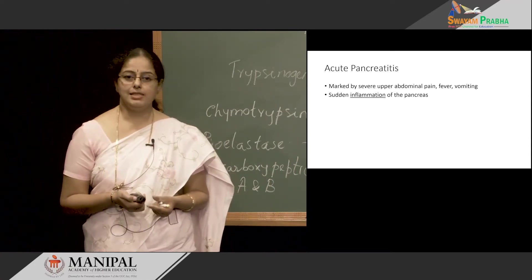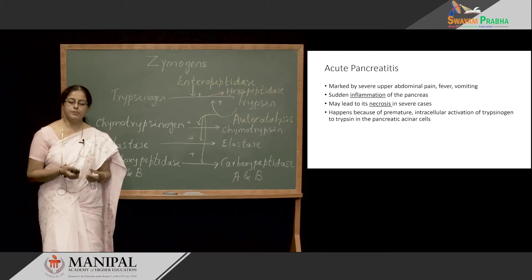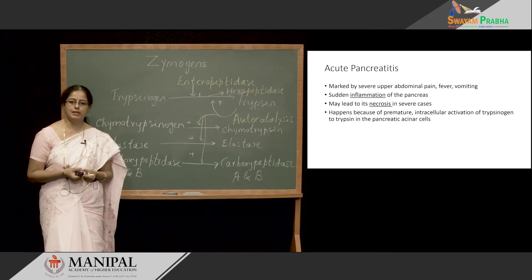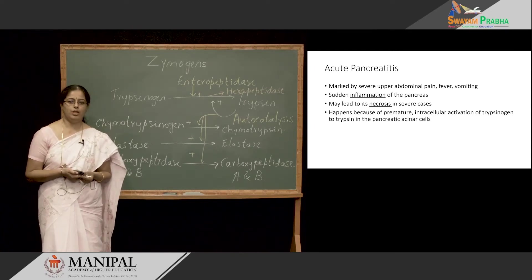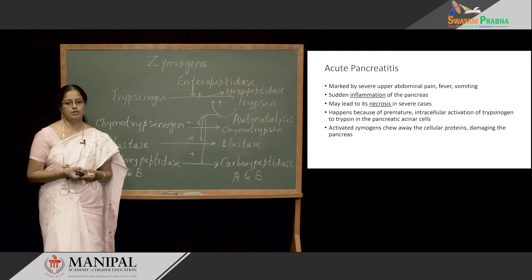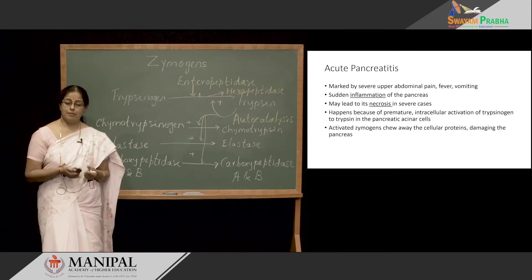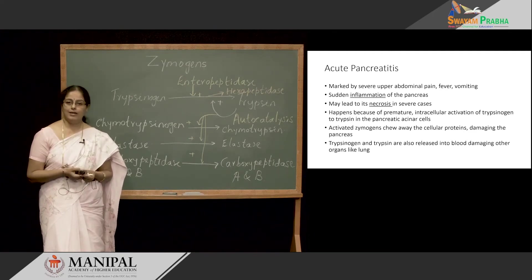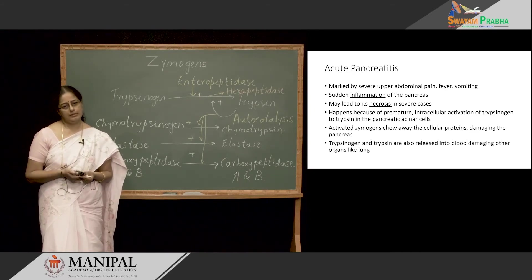In severe cases, acute pancreatitis can lead to necrosis of the pancreas. What happens here is trypsinogen gets activated to trypsin in the acinar cells themselves — there is premature activation of trypsinogen in the pancreas. These trypsin molecules will also activate other Zymogens, and all these active enzymes will start acting on the cellular proteins, damaging the pancreas. These Zymogens and active enzymes from the pancreas are also released into the blood, circulate, and reach different organs like the lungs, causing damage.